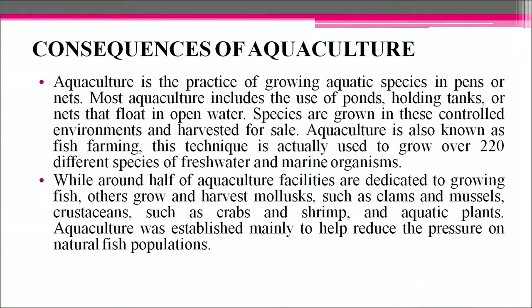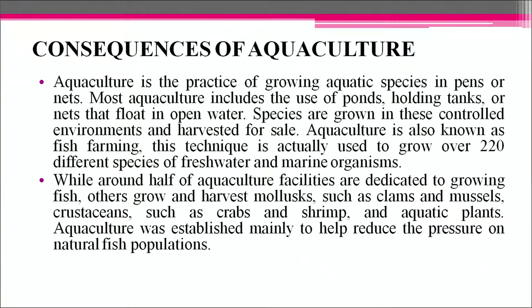Aquaculture is the practice of growing aquatic species in ponds or nets. Most aquaculture includes the use of ponds, holding tanks or nets that float in open water, where species are grown in controlled environments and harvested for sale. This technique is used to grow over 220 species of freshwater and marine organisms. While around half of aquaculture facilities are dedicated to growing fish, others harvest mollusks such as clams and mussels, crustaceans such as crabs and shrimp, and aquatic plants. Aquaculture was established mainly to reduce pressure on natural fish populations.